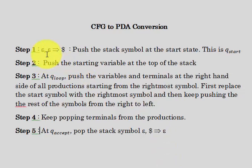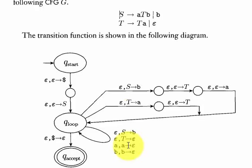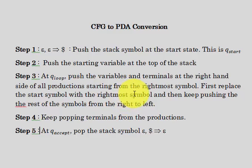So the next step is to push the start variable, then we go to the q_loop state. Here we push the variables and terminals on the right-hand side of all the productions. We can't just push it randomly — we have to first replace the start symbol with the rightmost symbol, then keep pushing the rest of the symbols from right to left.